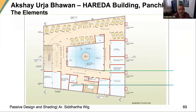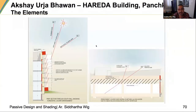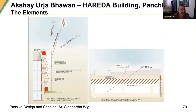Looking at some sections: the solar chimney again uses Bernoulli's principle — wider base and thinner top. The glazing continues completely and the insides are painted black. The shades coming out were all designed to allow winter sun in while completely shutting off summer sun. The complete window was also set at a slight angle.